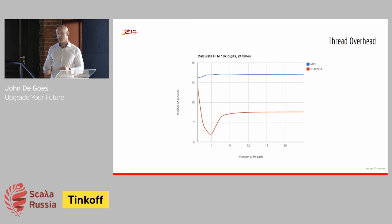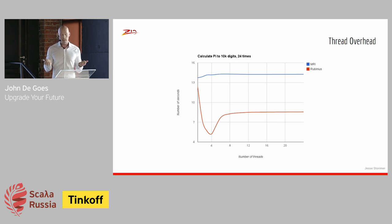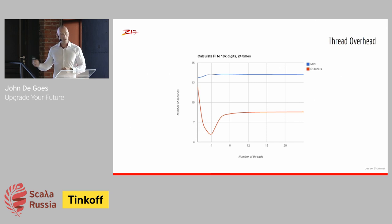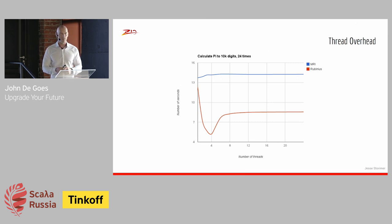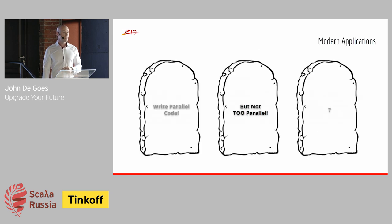If we have a four-core machine and try to do CPU work on it, creating more threads than we have cores doesn't make it faster — it actually makes it slower. That's because it takes a lot of work for a CPU core to switch between different threads. So throwing more threads at a problem is not necessarily going to help; in many cases it'll make things slower. In the ideal case, you write parallel code but you don't write code that's too parallel — you respect the limitations of the underlying hardware.